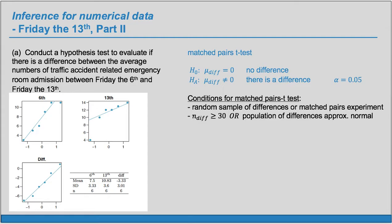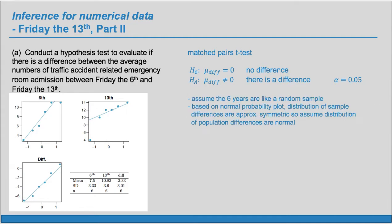Conditions for the matched pairs t-test: We need a random sample of differences or a matched pairs experiment, and we need the number of differences to be at least 30 or the distribution of the population of differences to be approximately normal. Here, we'll have to fudge a little bit, but we'll just assume that these six years that we have these paired data points for are like a random sample. And based on the normal probability plot, the distribution of sample differences are approximately symmetric, so we'll assume the distribution of population differences are approximately normal.